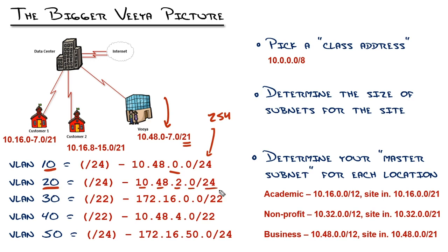Now you might ask — why did you skip one? I skipped 10.48.1 just in case we grow. Remember, I left extra VLAN numbers like 11 and 21 available between these. So if we ever grew outside of this /24, I could add 10.48.1 assigned to the servers, or whatever purpose I want to assign there, as the next /24. For example, maybe I've got some servers that need a new level of quality of service — it might be easier to break them into their own VLAN — or a server with a different level of security. Thus giving myself one VLAN of growth for our small business.